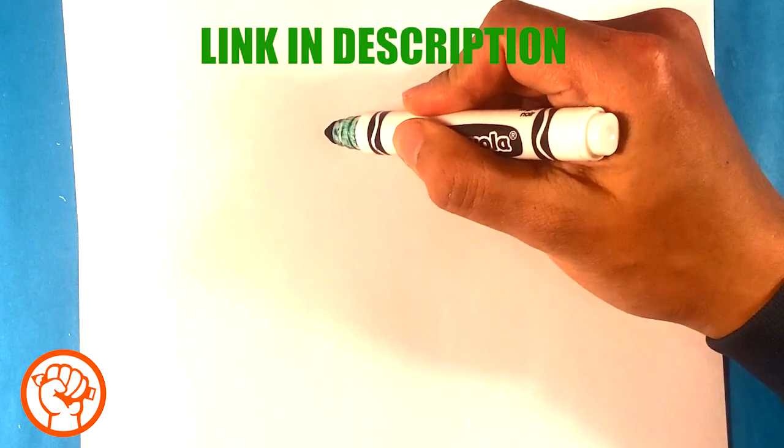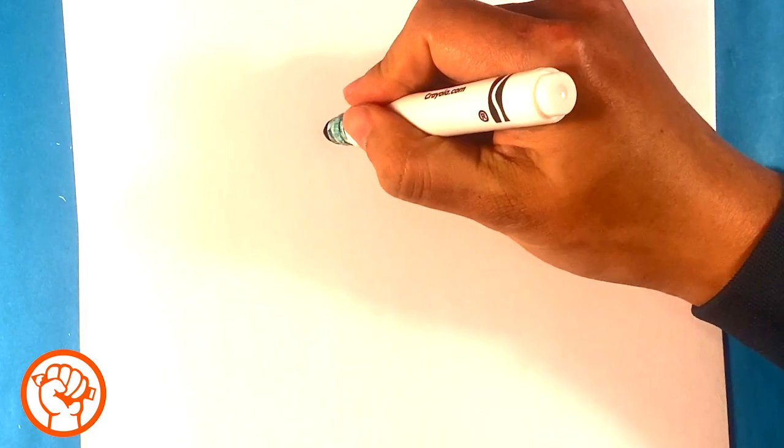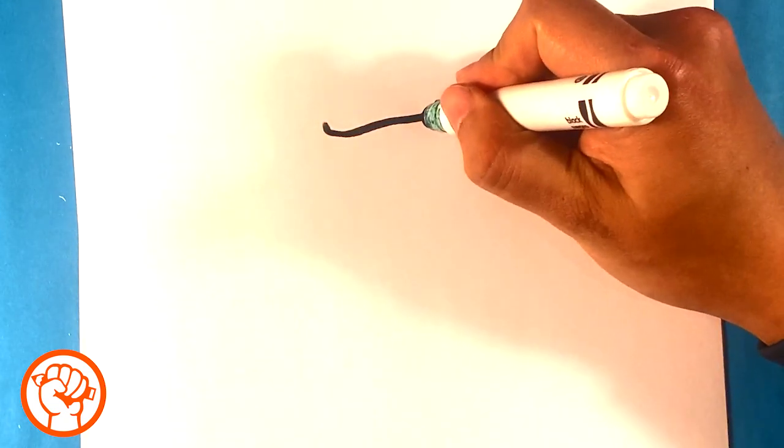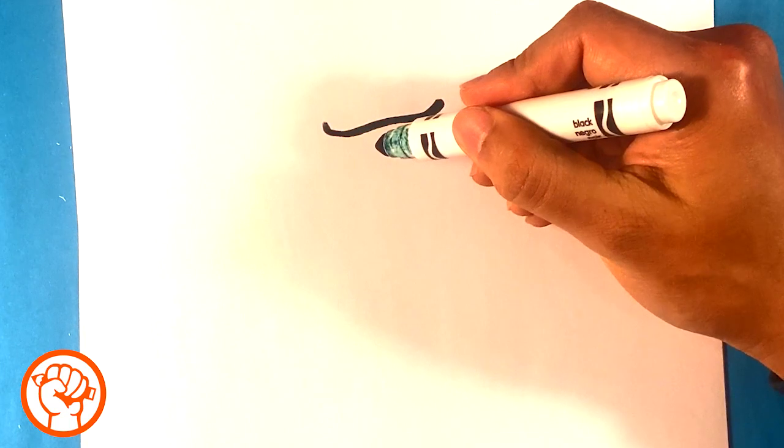That's going to be the bottom of that flamingo hat, but I'm not actually going to draw the flamingo hat quite yet. I'm going to draw a straight line down for the front of the head, for the crewmate's head, and now I'm going to draw a straight line here for the top portion of the window visor.